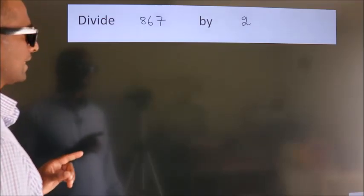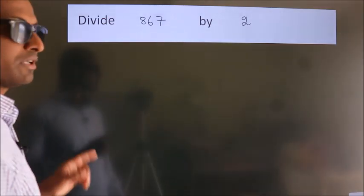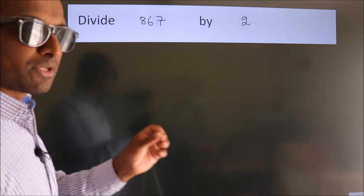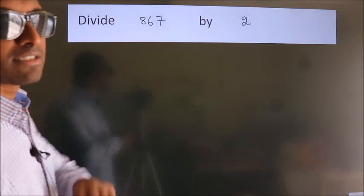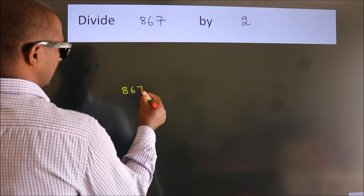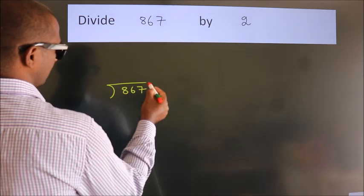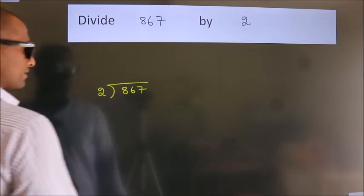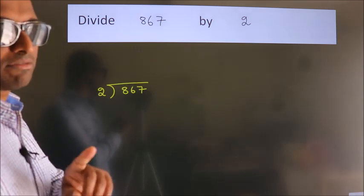Divide 867 by 2. To do this division, we should frame it in this way. 867 here, 2 here. This is your step 1.